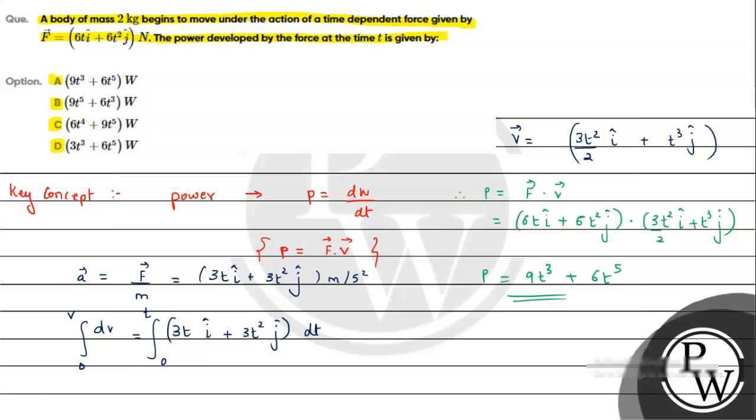If we look at options, option A will be the correct answer: 9t³ + 6t⁵, and this will be in watts. I hope you understood the solution. All the best.